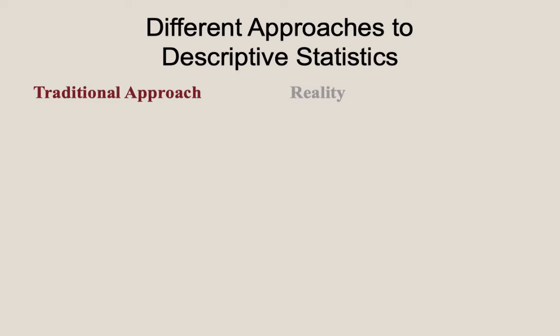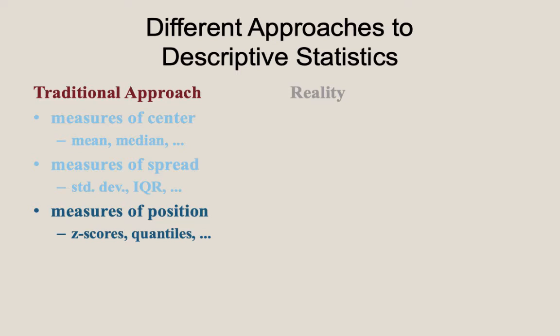Before I proceed, there is a brief comment I want to share about my approach to teaching statistics. The traditional approach found in many modern statistics textbooks is to introduce a collection of statistics and tools to measure the center of the data, such as the mean, median, mode, maybe even the mid-range or geometric mean. Next, you move to different measures of spread, such as the standard deviation, the range, or the interquartile range. And then finally, you move to measures of position, like the z-score and general quantiles. While I won't elaborate here why I do not prefer this approach, I will simply say that this isn't really how statisticians and data scientists think about or work with data in the real world.